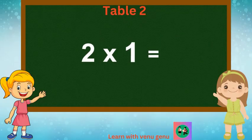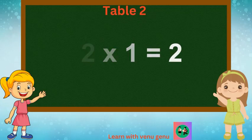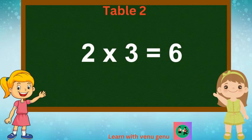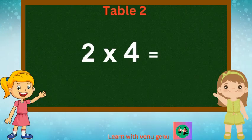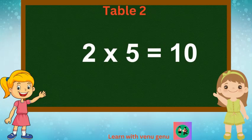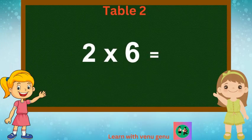2 1s are 2. 2 2s are 4. 2 3s are 6. 2 4s are 8. 2 5s are 10.